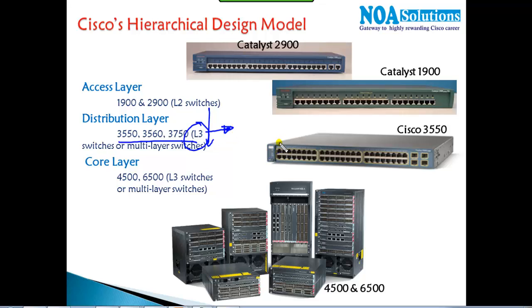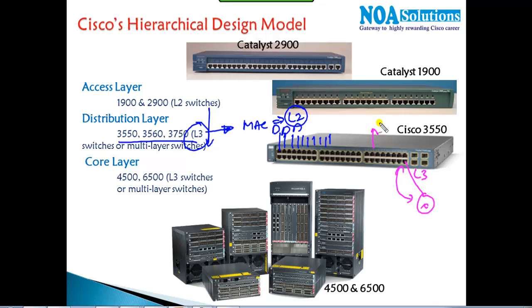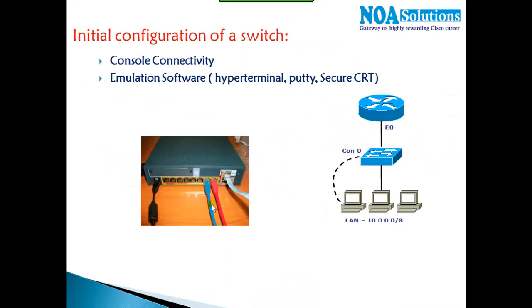The major advantage of Layer 3 switches is they do the Layer 2 job of identifying and forwarding traffic by MAC address, but they can also connect to a router and run routing protocols. Specific ports can be used as Layer 3 ports for routing jobs — that's why we call them Layer 3 or multilayer switches. Core level switches like the 4500 and 6500 series also support Layer 3 capabilities.